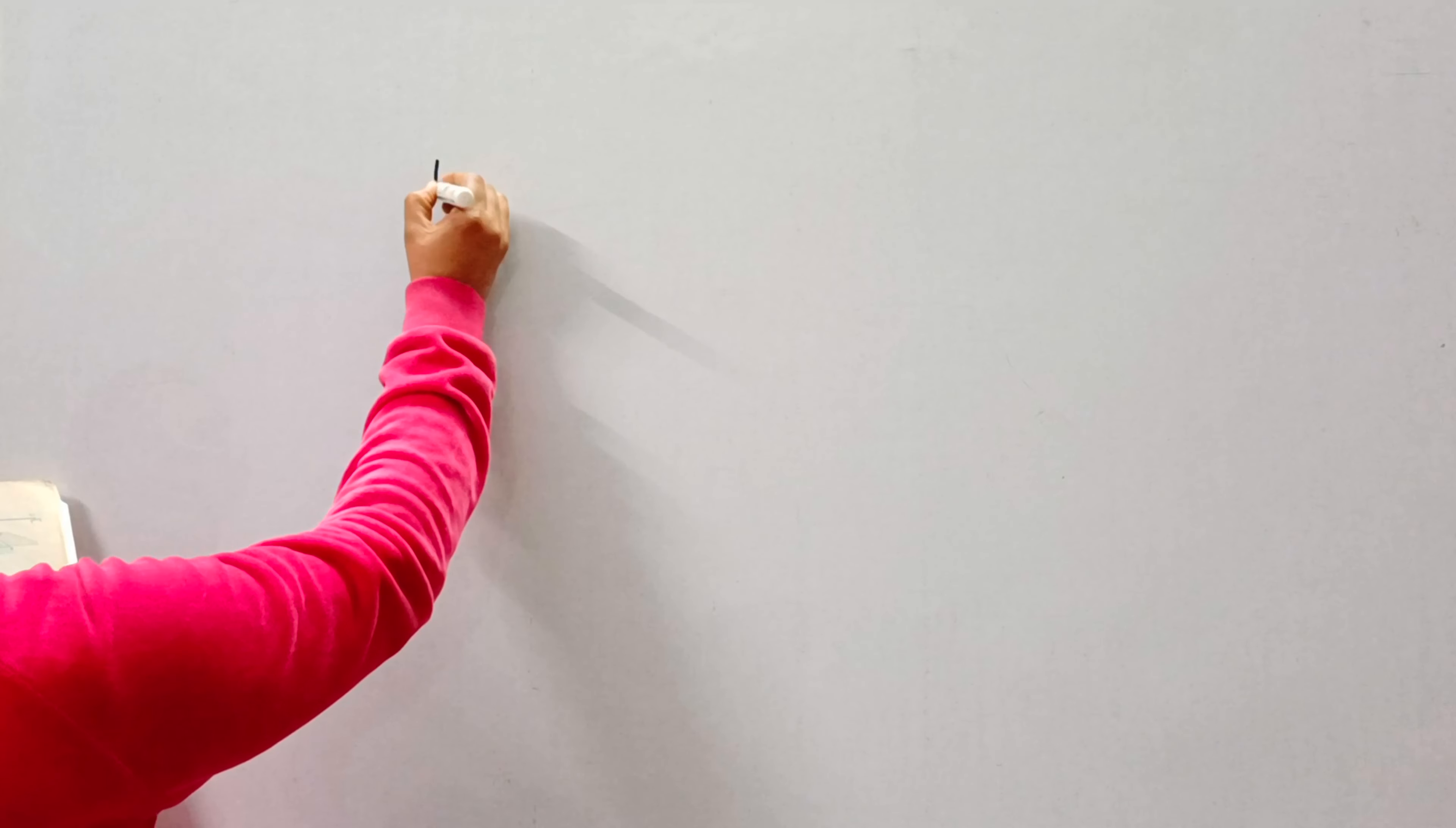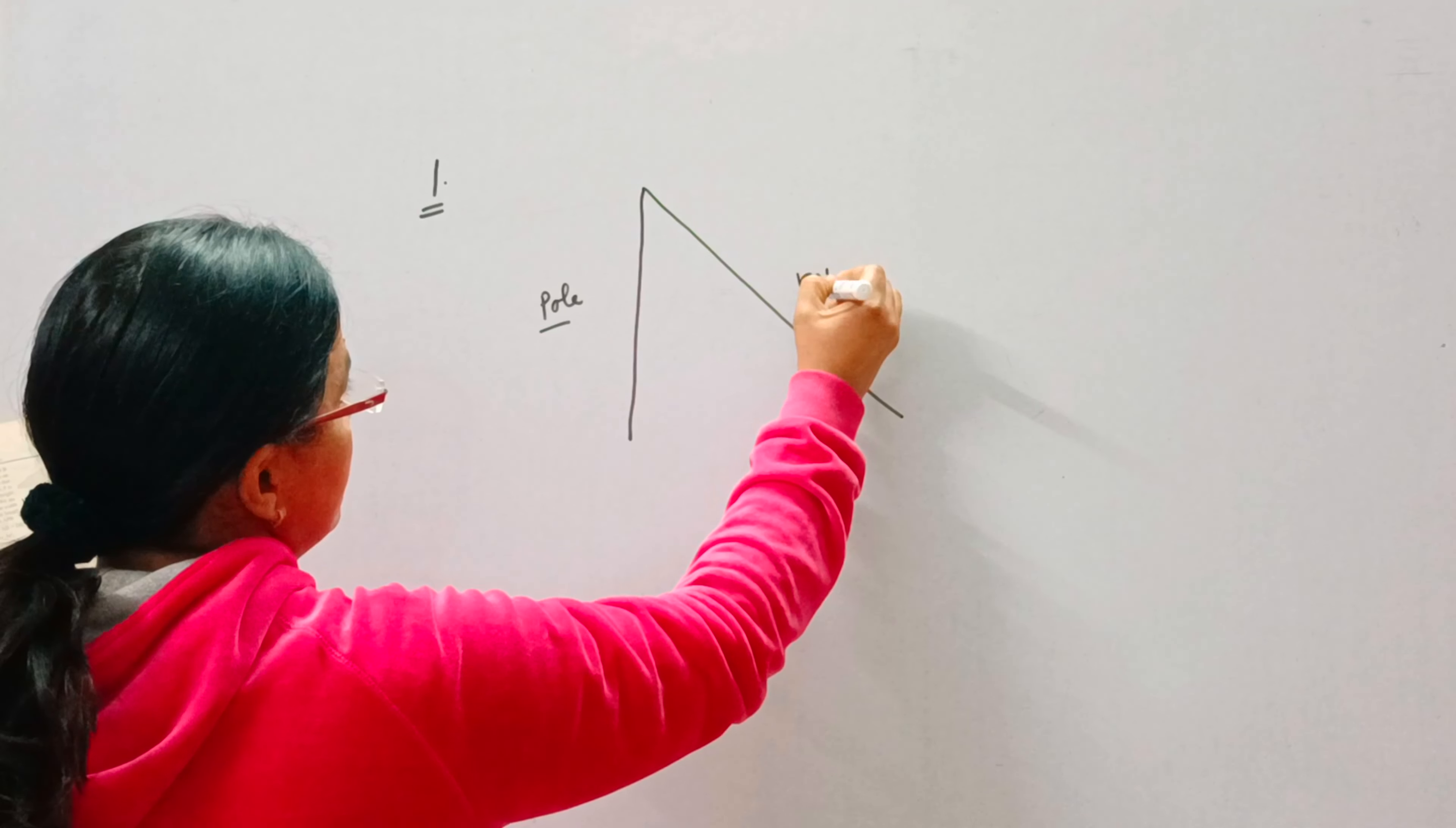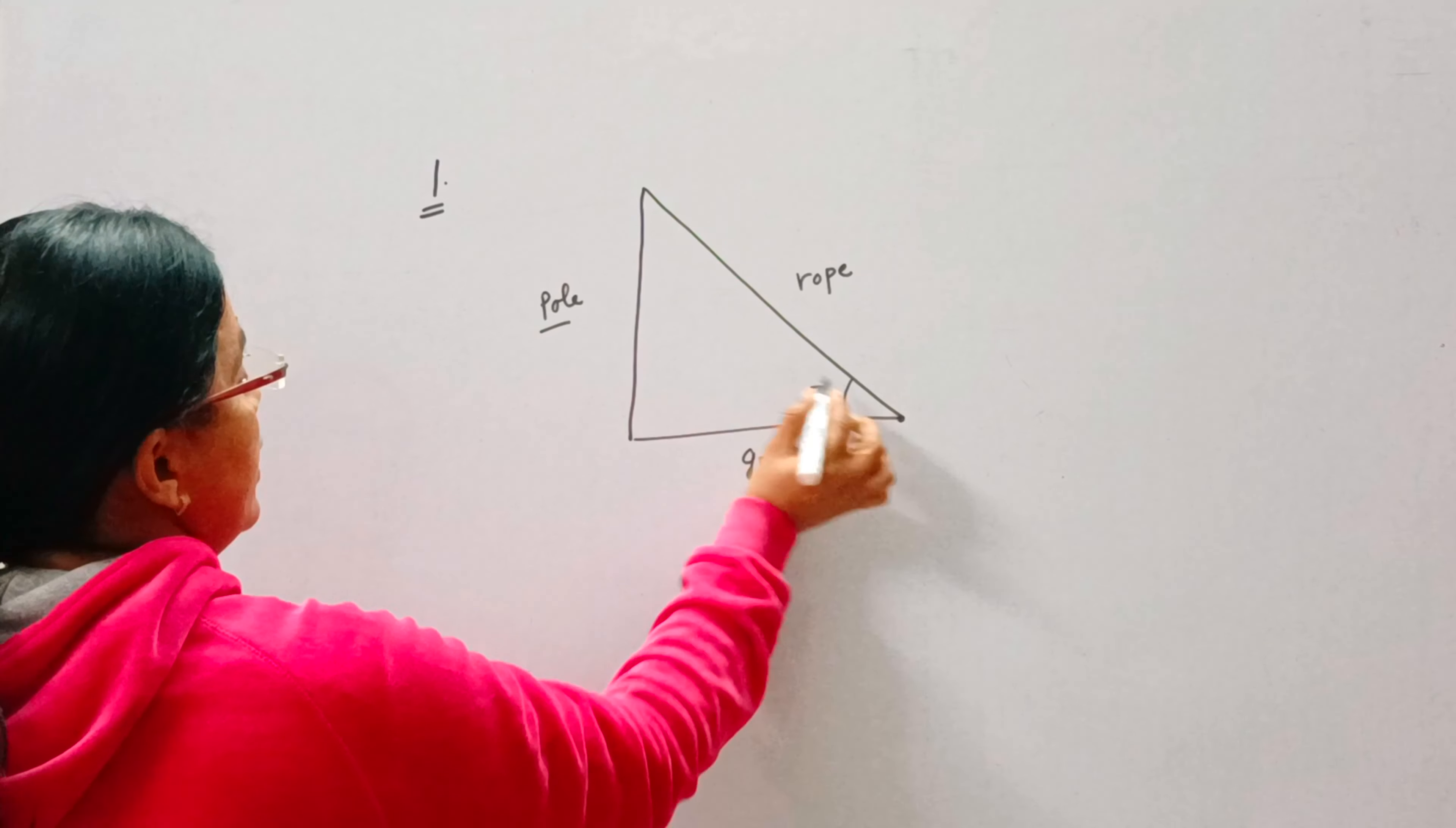Now first of all we will make the figure of this question. A circus artist is climbing a 20 meter long rope which is tied from the top of a vertical pole. So this is a vertical pole, and this is the rope that is tied to the ground. This rope makes an angle of 30 degrees with the ground. This is ground level. This angle is 30 degrees.